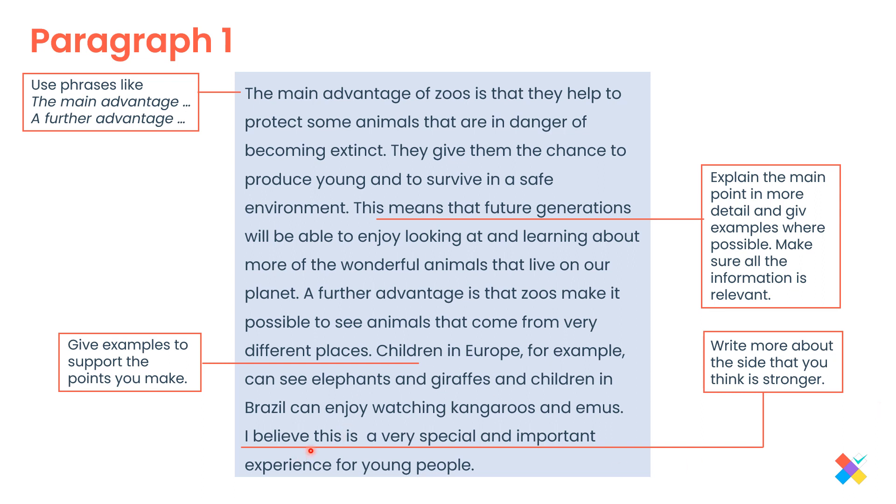This, again, reference. This refers to what? This, that children in Europe can see elephants, whereas children in Brazil can enjoy watching kangaroos and emus. So for a band five, I think this is very clear, logical, I like it.